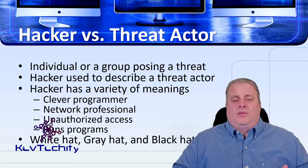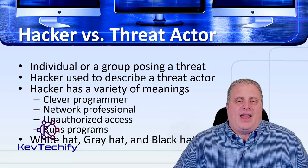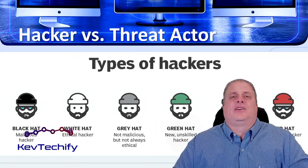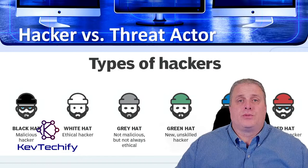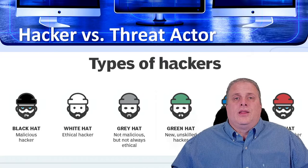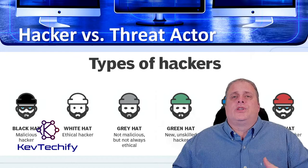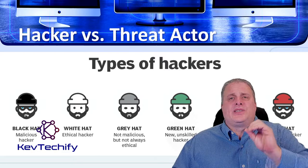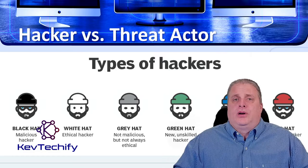In today's world, there are a couple more colors of hackers. A green hat hacker is somebody new or unskilled who is doing malicious things but just started. Green hat can also mean someone hacking for environmental reasons — targeting a company doing harm to the environment to make them stop. A blue hat hacker is a vengeful hacker — someone you may have fired from your company who comes back to get vengeance. A red hat is a vigilante hacker, not associated with a company, but going in to hack that company to right a wrong.